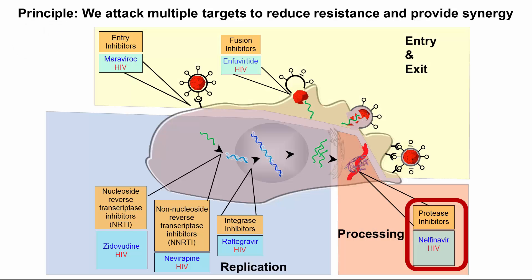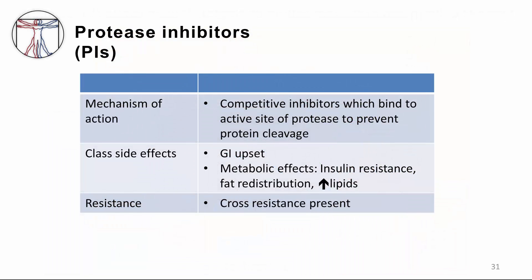Finally, let's talk about protease inhibitors, or PIs. The widespread use of PIs starting in 1996 really ushered in the era of HAART — highly active antiretroviral therapy — or combination antiretroviral therapy, now simply called ART. This really led the way for reversing the death sentence that AIDS was. Protease inhibitors work as competitive inhibitors which bind to the active site of protease to prevent cleavage of the viral polyproteins. There are several class side effects including GI upset, and more importantly metabolic effects such as insulin resistance, fat redistribution, lipodystrophy, and hyperlipidemia.